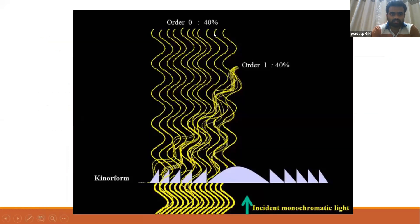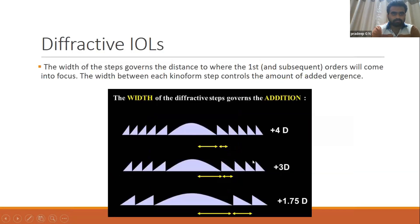Undeviated light constitutes zero-order diffraction, comprising 40% of incident light. Another 40% is deviated light used for the alternate focal point, and the remaining 20% of incident light is lost. The width of the steps determines the distance at which first-order diffraction comes into focus, while the width between each kinoform step controls the amount of added power.